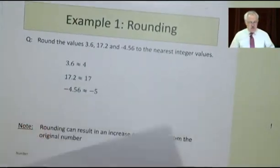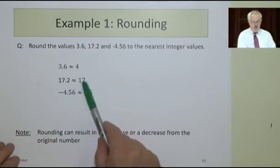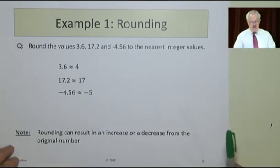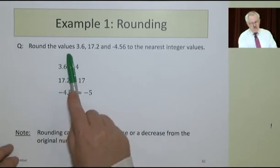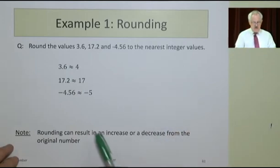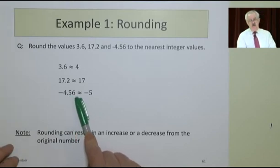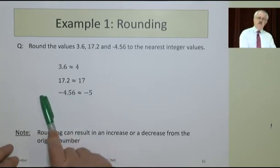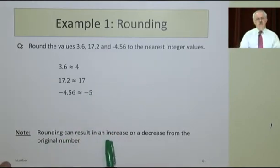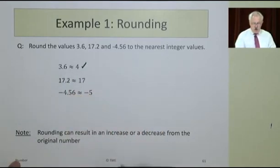For example, we might look at 3.64 and say it's roughly 4, or 17.2 is roughly 17, or -4.56 is -5. When we round values, positive or negative, we round them to the nearest integer value. So the nearest integer value on the number line for -4.56 is nearer to -5 than to -4. Rounding can result in an increase or a decrease.